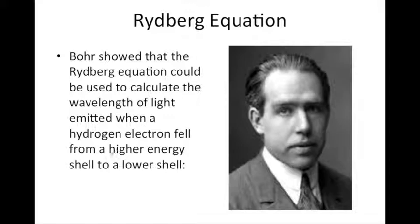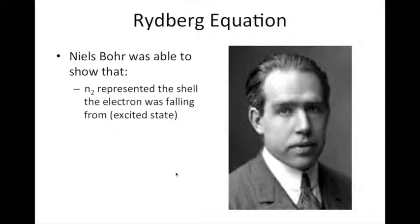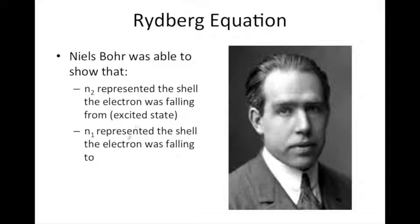He was able to show that n2 represented the shell where the electron was falling from, so that would be its excited state. N1 represented the shell where the electron was falling to.